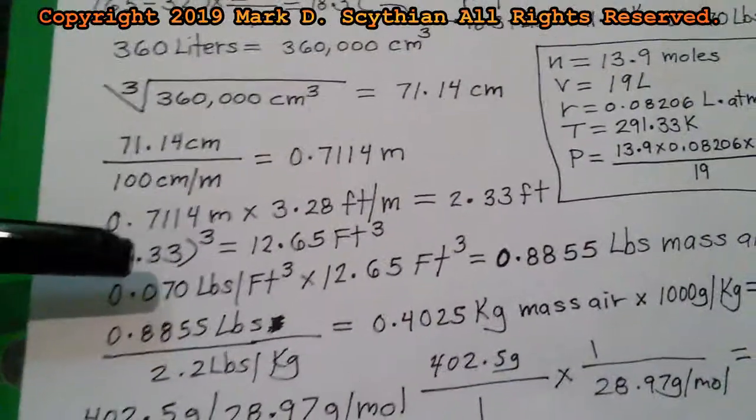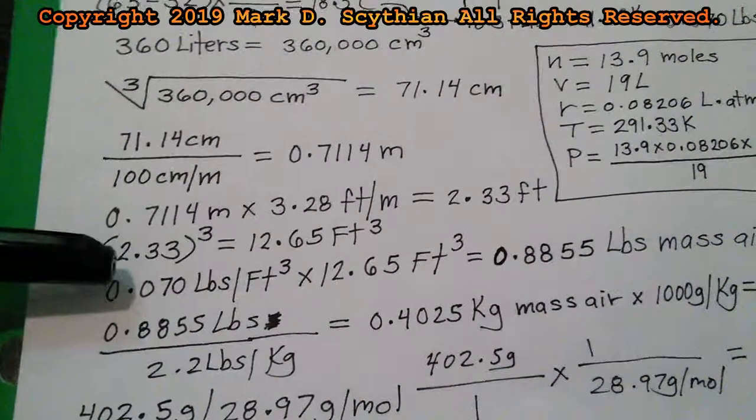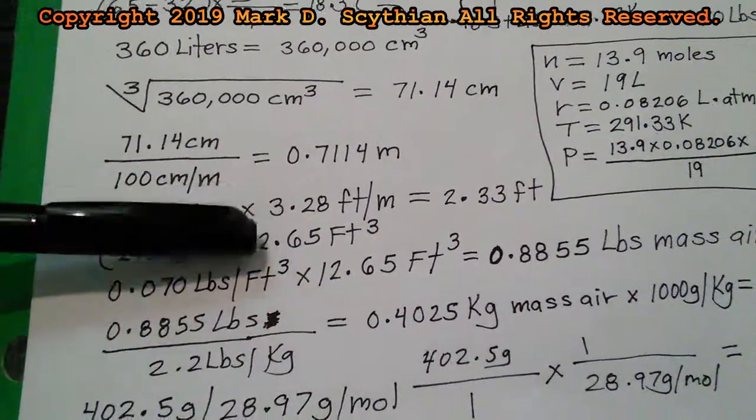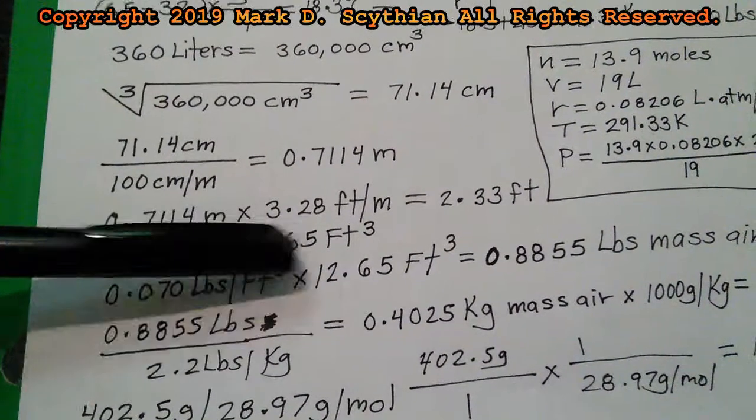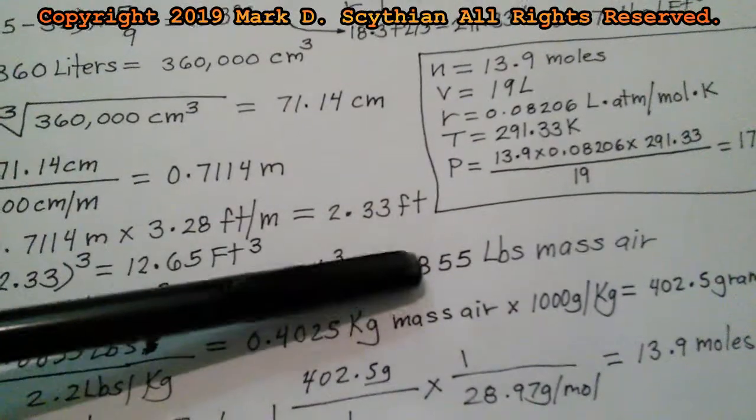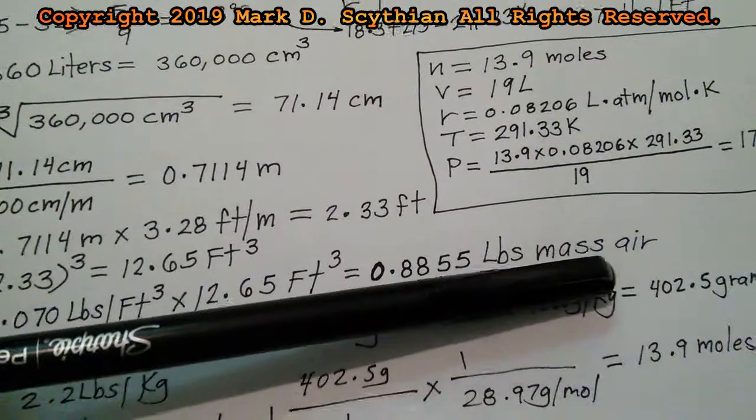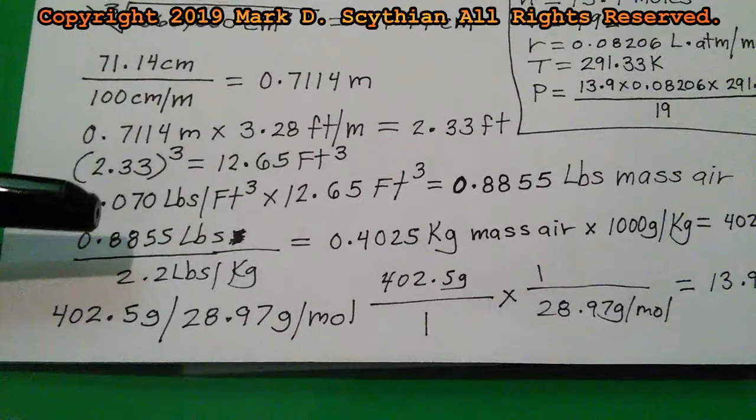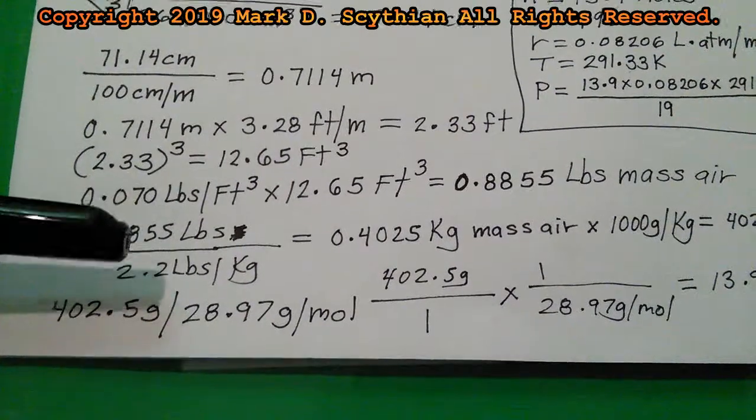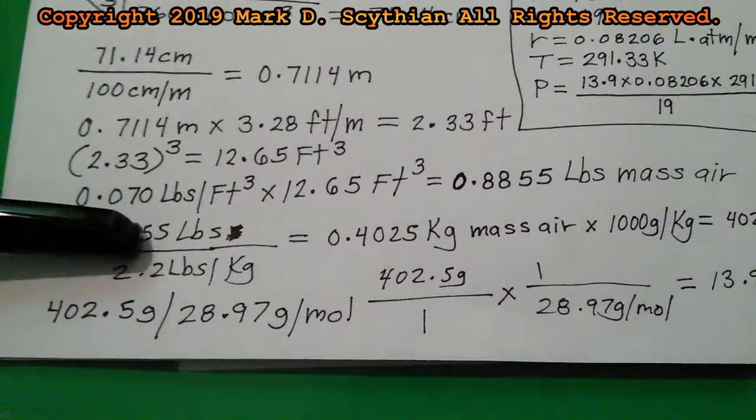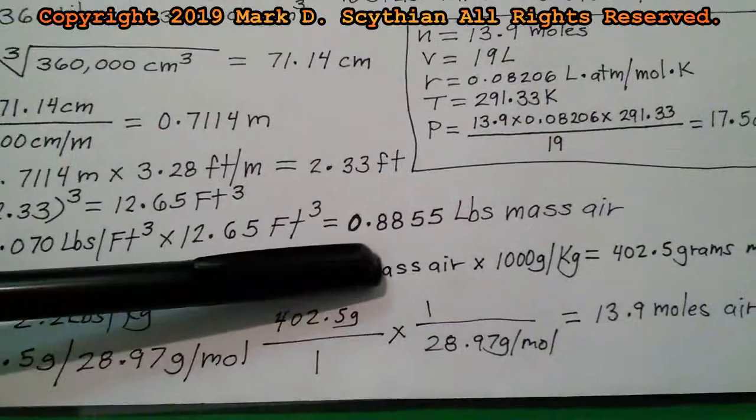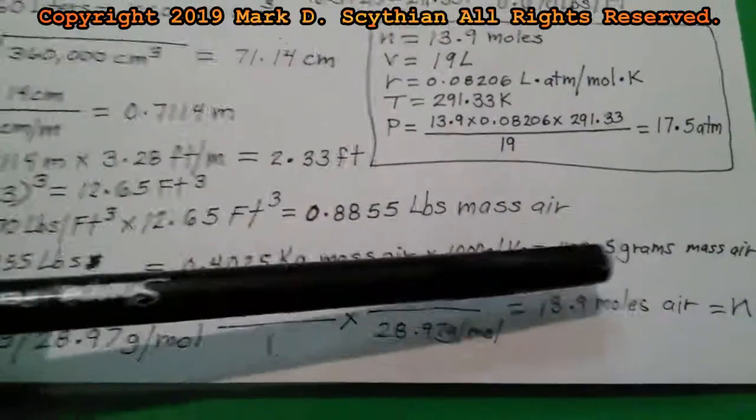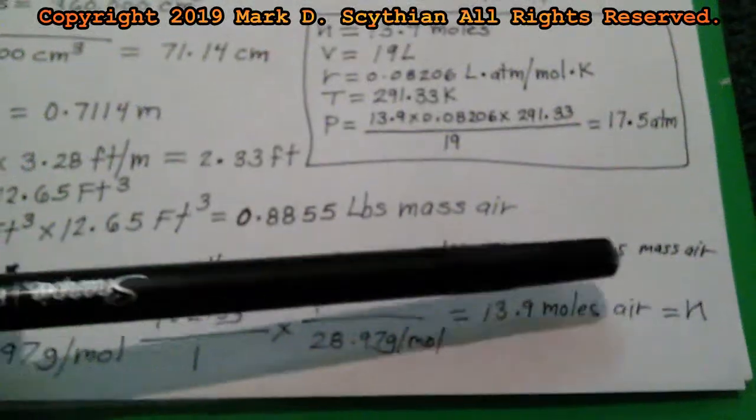Now we have the air density in pounds per cubic foot. We calculated the volume of compressed air charge in cubic feet, multiplied them out, we calculate 0.8855 pounds of mass air is compressed into the air tank. We then divide that into the amount of pounds per kilogram to get the mass, that's 0.4025 kilograms mass air, and then there's 1,000 grams to 1 kilogram. When you multiply it out, it's 402.5 grams mass air.